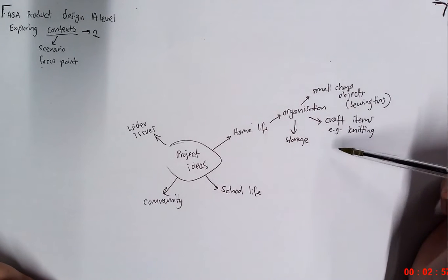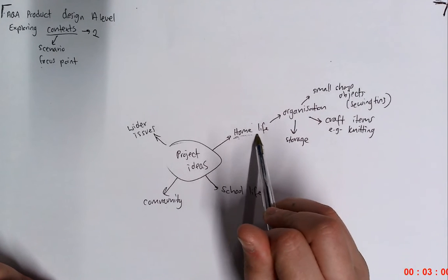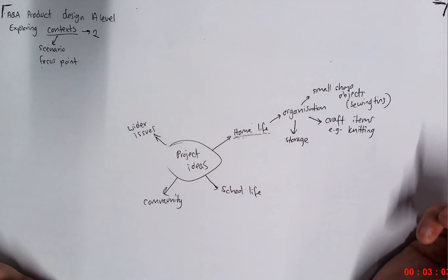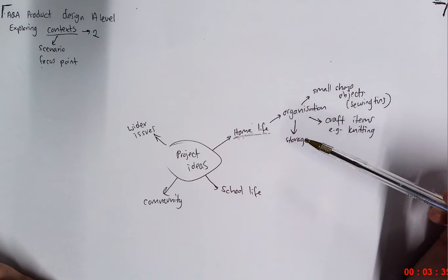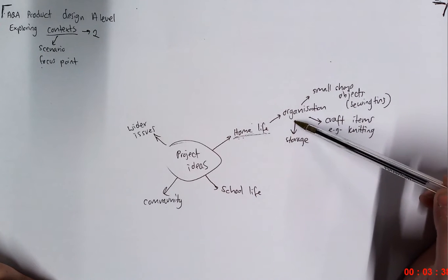So what I'm literally doing, I'm thinking about what is happening in my life that I could potentially work with. Because if you have a context that you're actually really close to, something that's fairly personal, something you've got experience with, you'll have a much better understanding as to what research you'll need to do. Who your client could be. Because you should always avoid having yourself as a client.